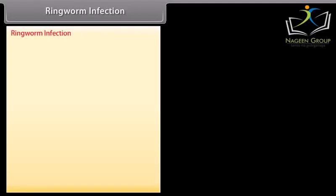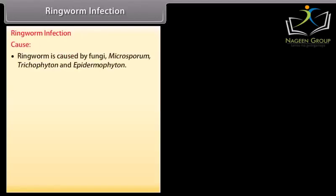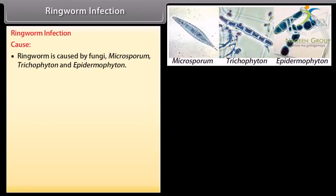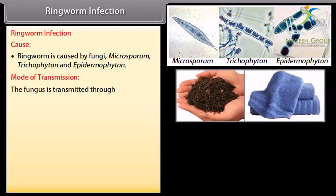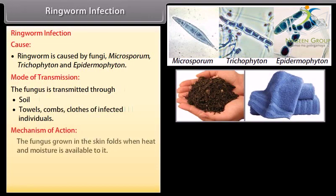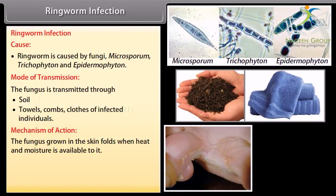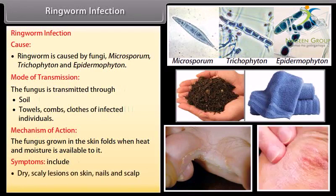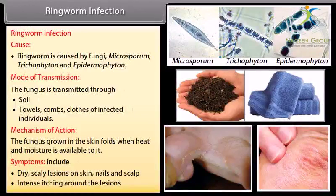Ringworm infection is caused by fungi Microsporum, Trichophyton, and Epidermophyton. Mode of transmission: the fungus is transmitted through soil, towels, combs, and clothes of infected individuals. Mechanism of action: the fungus grows in the skin folds when heat and moisture is available to it. Symptoms include dry scaly lesions on skin, nails and scalp, and intense itching around the lesions.